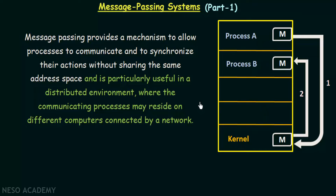Let's say you are chatting with your friend over the internet. You are sending messages from your system and your friend is receiving them in his system located somewhere else. Both processes need to communicate, but they are not residing in the same system — they reside in different systems connected through a network. In this scenario it is difficult to create a region of shared memory accessible by both processes, so a message passing system can be used where processes communicate via messages sent from one process to another.